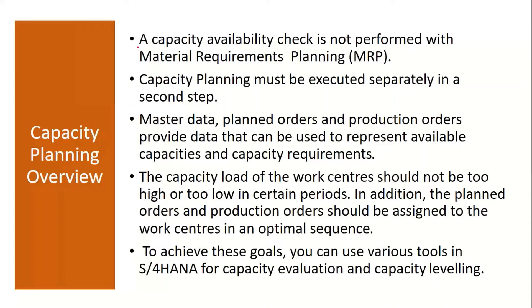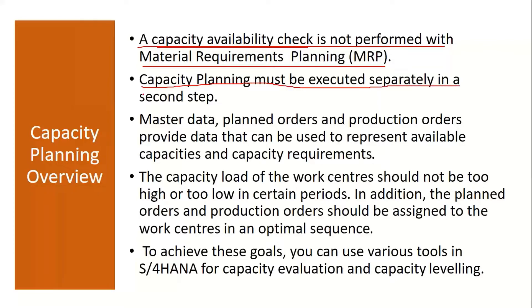A capacity availability check is not performed with MRP — material requirement planning. Normally when you run MRP, the system will not check capacity availability or machine availability. Capacity planning must be executed separately as a second step.